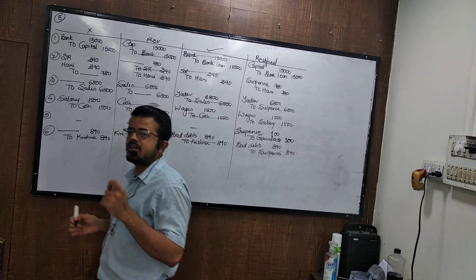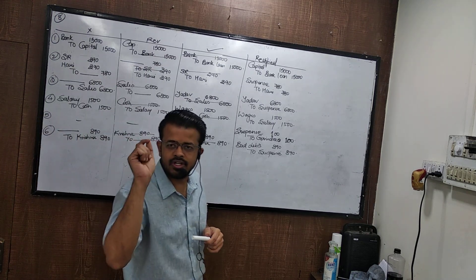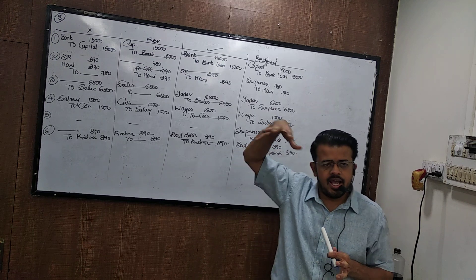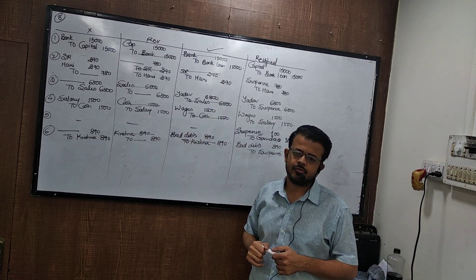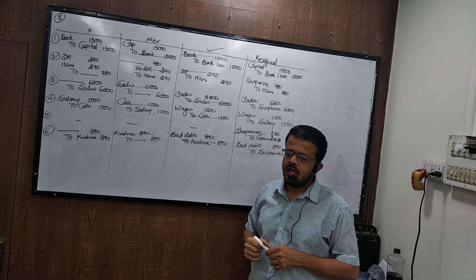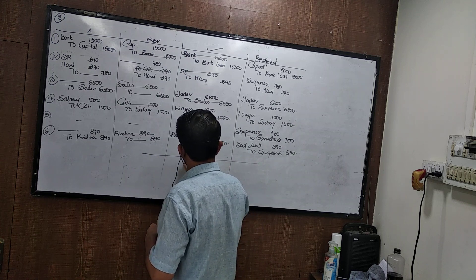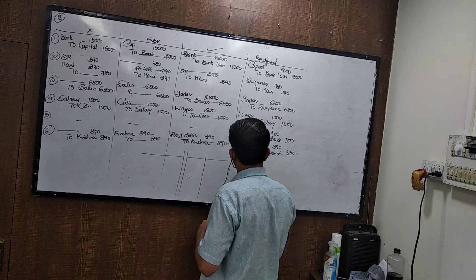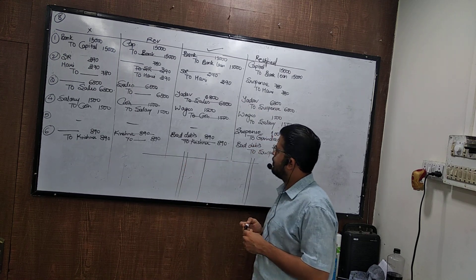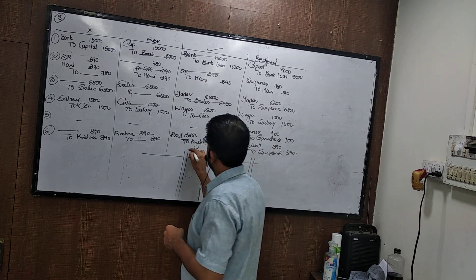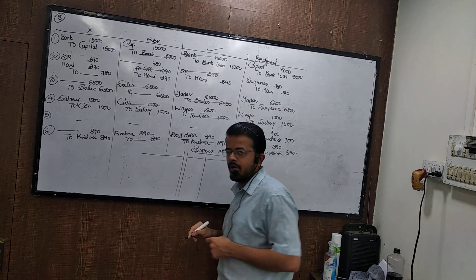Third one: 1600 printing bill was posted on the credit side of printing account. The correct entry for printing is printing expense to cash. It was posted to the credit of printing account. Wrong entry: dash to cash to printing. Reverse: printing cash to dash. Rectified: printing to suspense, 3200.